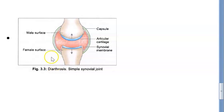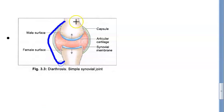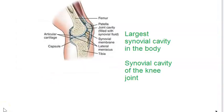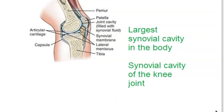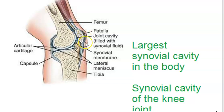This is your largest synovial cavity in the body - this is your knee joint, the synovial cavity of the knee joint. What do you see here? You can see the patella - that is your sesamoid bone. Then you see the femur, then you see the tibia. This is the joint capsule. Inside there is articular cartilage, synovial fluid, and synovial membrane - all this you can see.